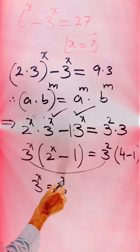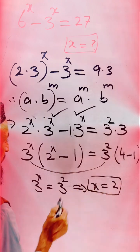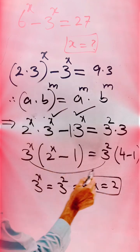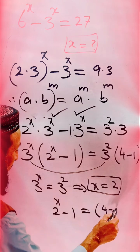If we compare this term, 3^x is equal to 3 square, so it means that we get here x is equal to 2. Similarly, we are making this term: 2^x - 1 is equal to 4 - 1.